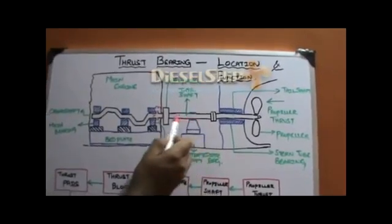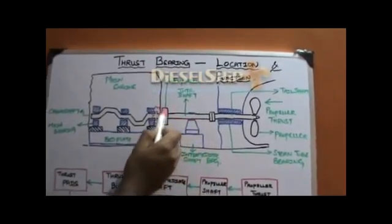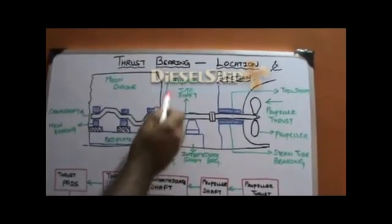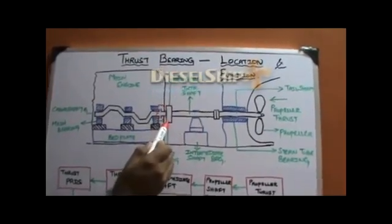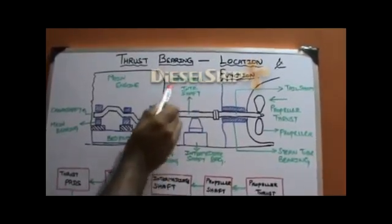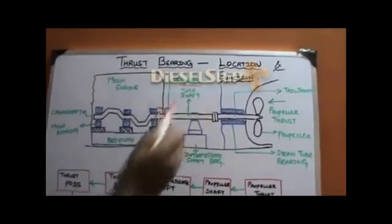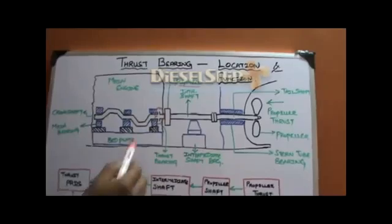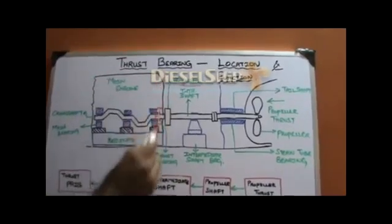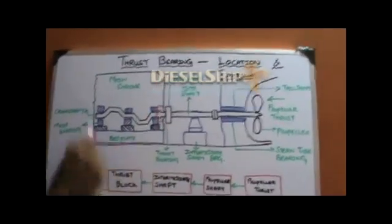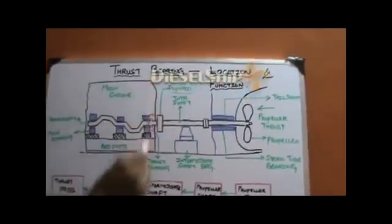The intermediate shaft is connected to the flywheel of the main engine. This is the flywheel, marked as 'flywheel.' Let us assume this to be the complete main engine structure.